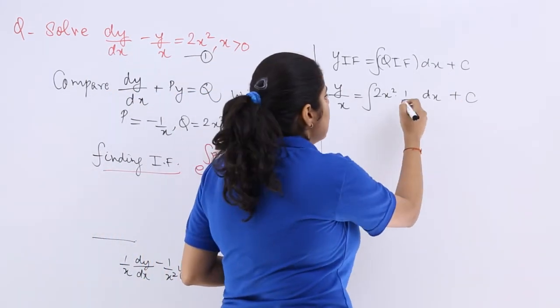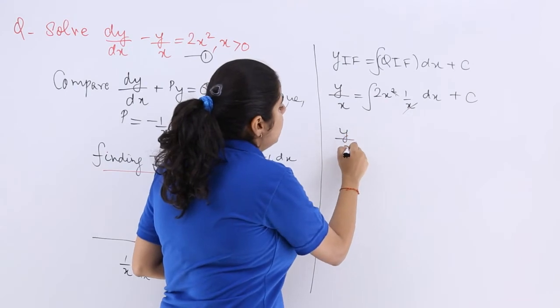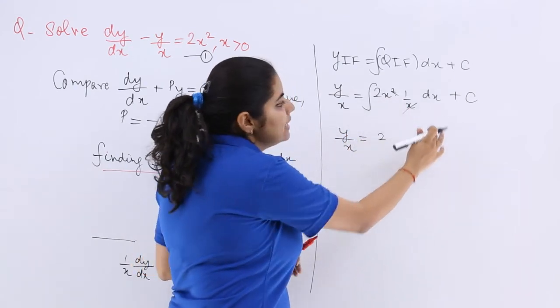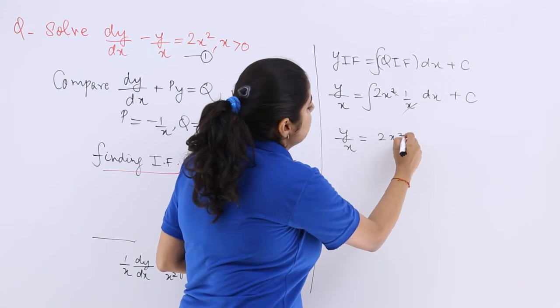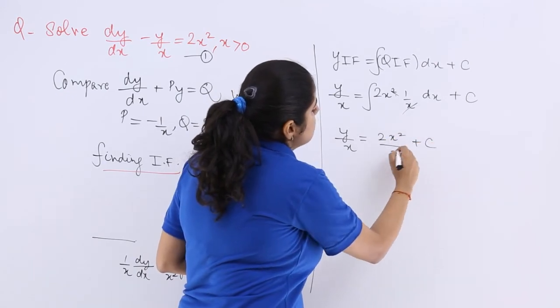Now what happens? This gets cancelled so y/x = ∫2x dx. Integration is x²/2, so y/x = x² + c.